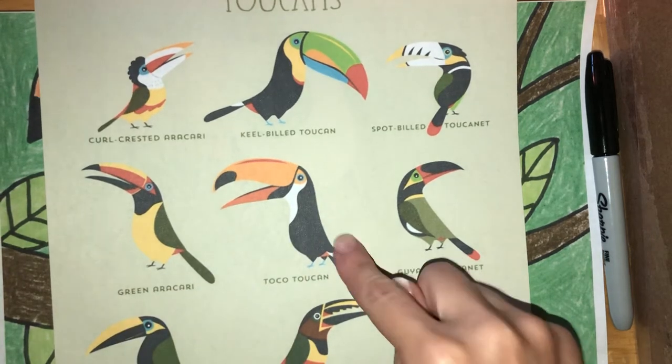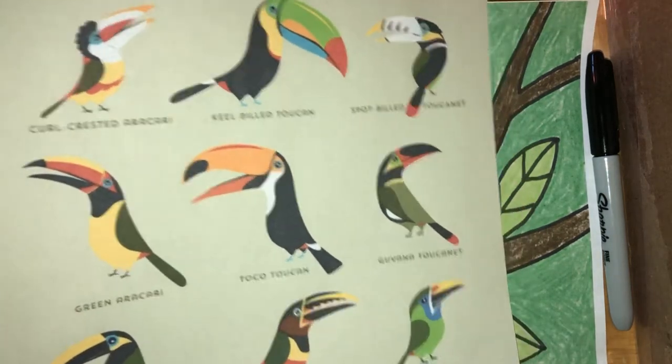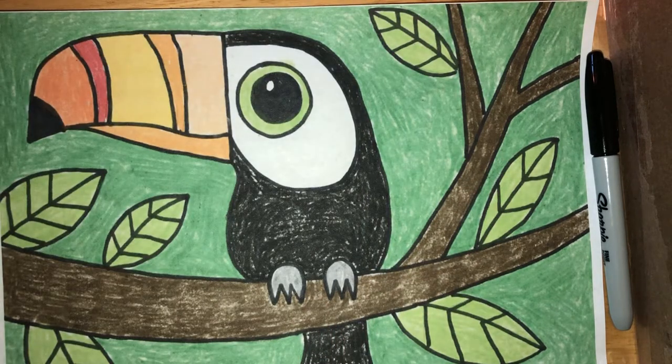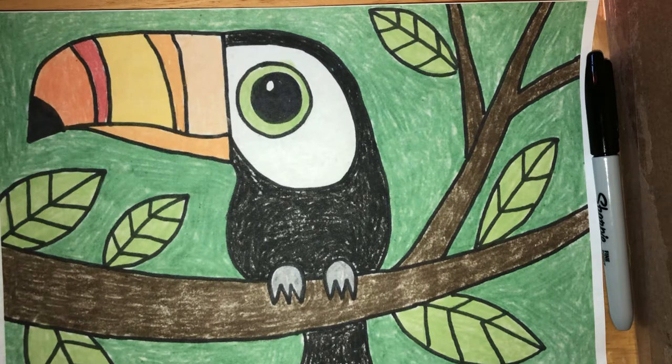This one's kind of like Toucan Sam on the Froot Loops box, right? So we're going to do a similar one to that today, the toco toucan. All right, let's get started. To start with our toucan today, we're actually going to start with the tree branch.